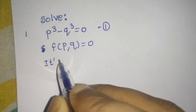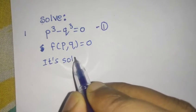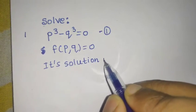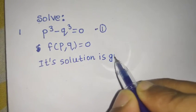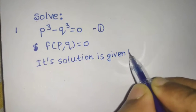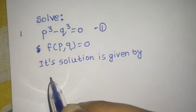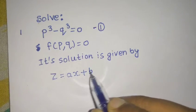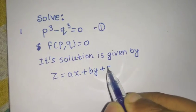Its solution is given by Z = AX + BY + C.